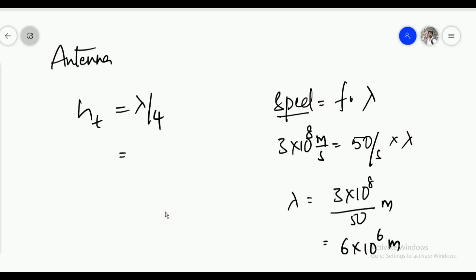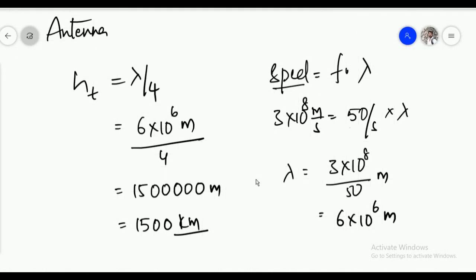So we have to substitute this value of lambda here, 6 into 10 power 6 meters by 4. That is 1500 kilometers. That means you have to construct a tower which is of 1500 kilometers, or whereby you will go out of the space. It is impossible.